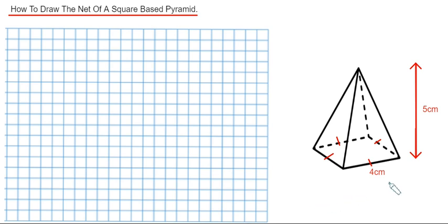So the one we're going to draw is shown on the right hand side. We've got a base of side length 4 centimetres and the vertical height is 5 centimetres.